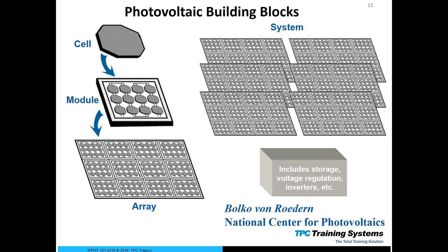If you put multiple arrays together, you have what we call a solar powered system. What a system has that an array doesn't is all the peripheral components to make the solar panels work: energy storage, voltage regulation, voltage surge protection, combiner boxes, inverters, converters, and communications devices. We'll get into those peripherals in just a few minutes to give you an idea of what they are.